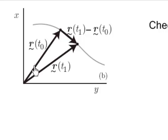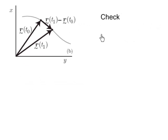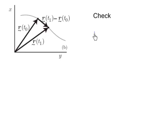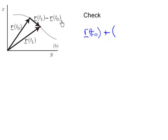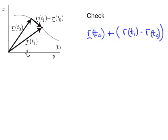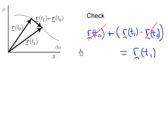If you want to check this, it's easy: notice that this vector plus that vector should equal the other one. So r(t0) plus the quantity r(t1) minus r(t0) must equal r(t1). The first vector is r(t0), the next vector is r(t1) minus r(t0). Notice that r(t0) gets cancelled, which just leaves us with r(t1). Check.